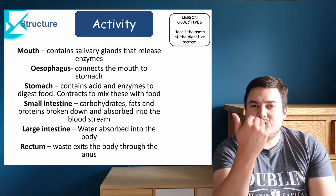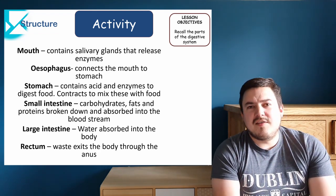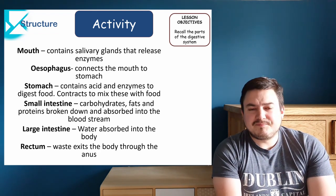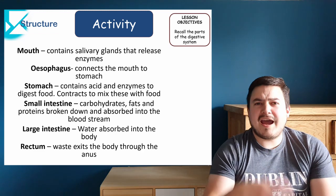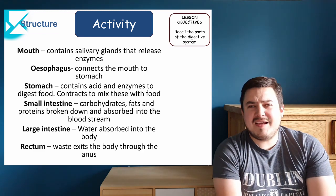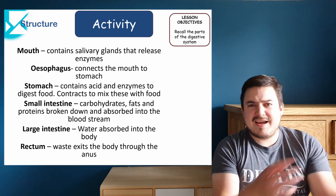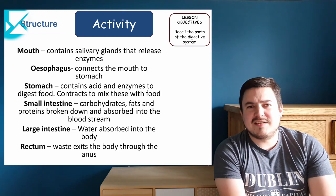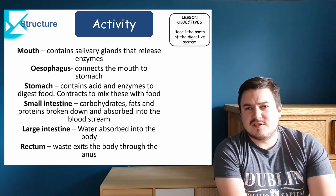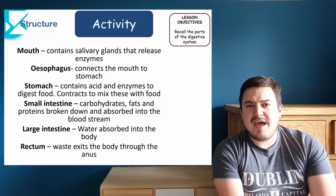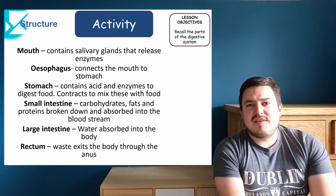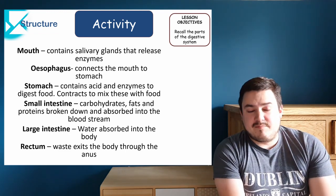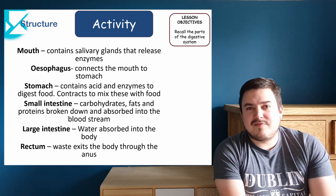We then go down the esophagus — the food tube that connects our mouth to our stomach — where acid and enzymes are mixed together. The stomach contracts and relaxes, swashing everything round together, mixing the acid and enzymes with the food to break it down. From there, the broken-down food travels into the small intestines.